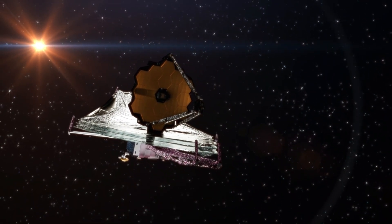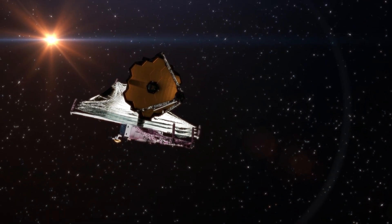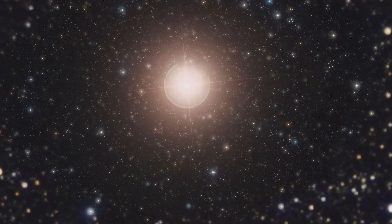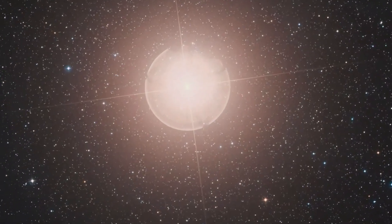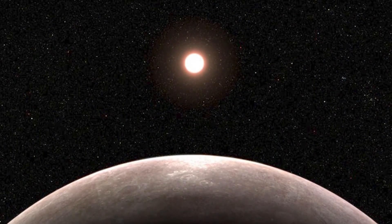The James Webb Space Telescope saves the day once more by showing that Betelgeuse, a huge star, is about to blow up in a big way. Because Betelgeuse is so close to Earth, its supernova will be bright enough to see during the day for weeks.